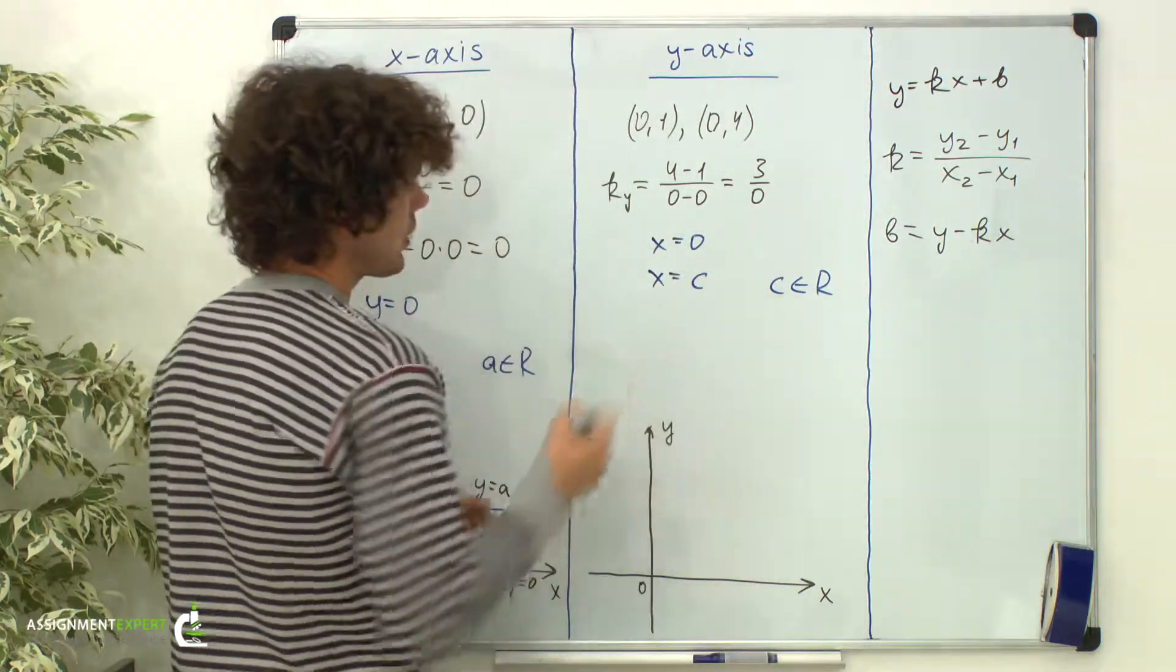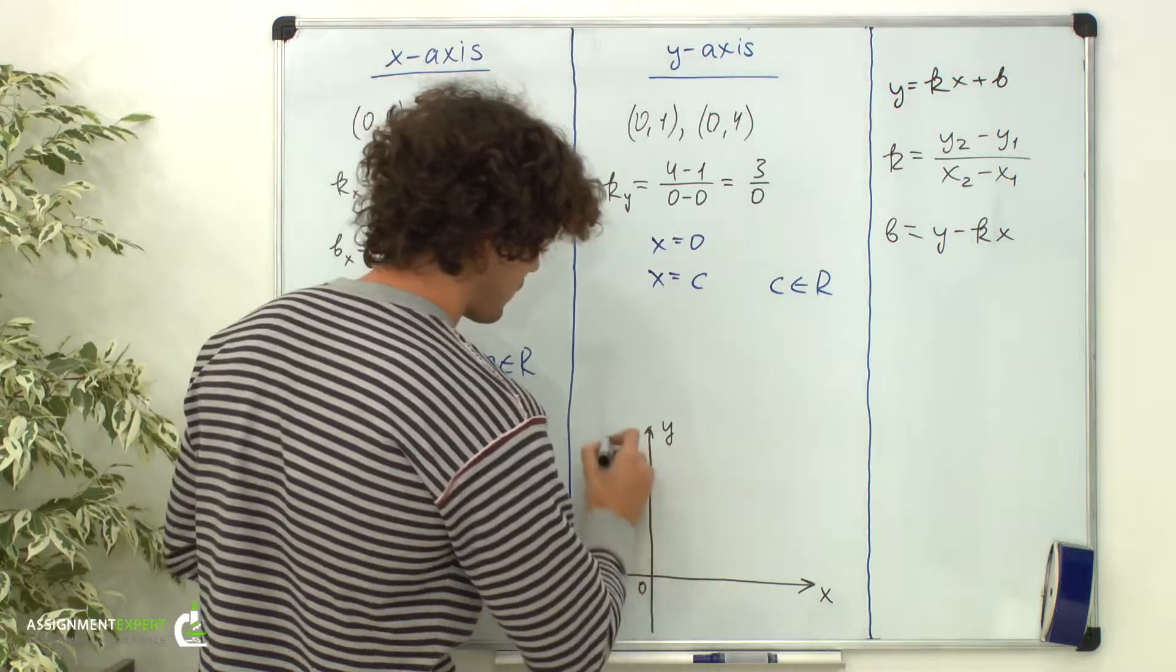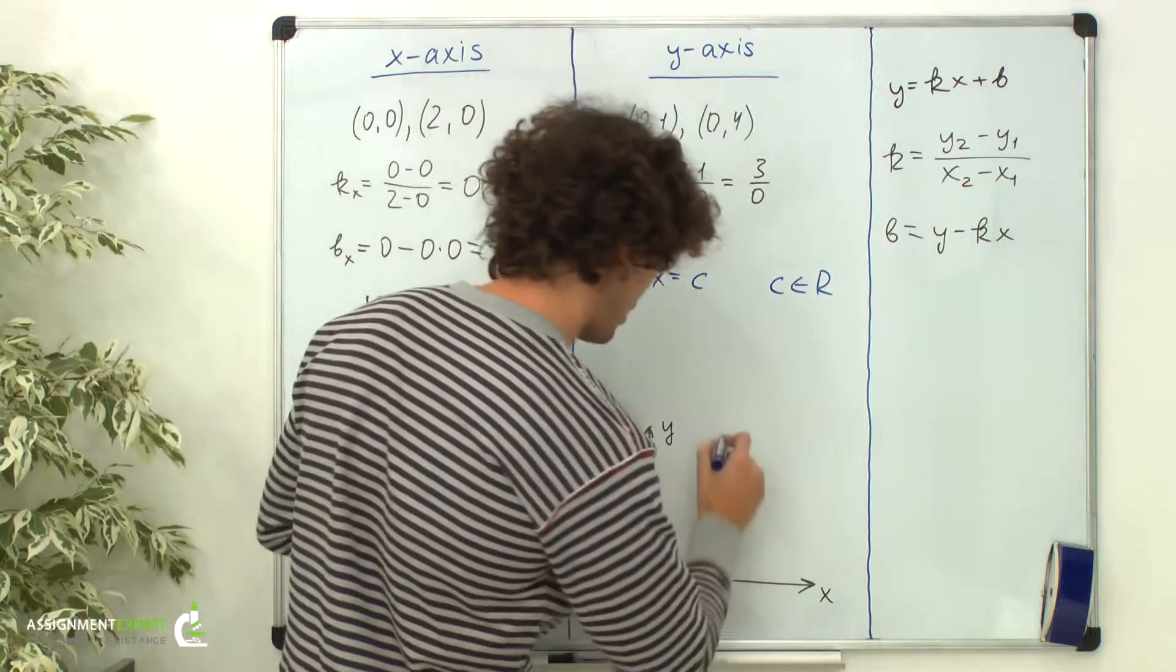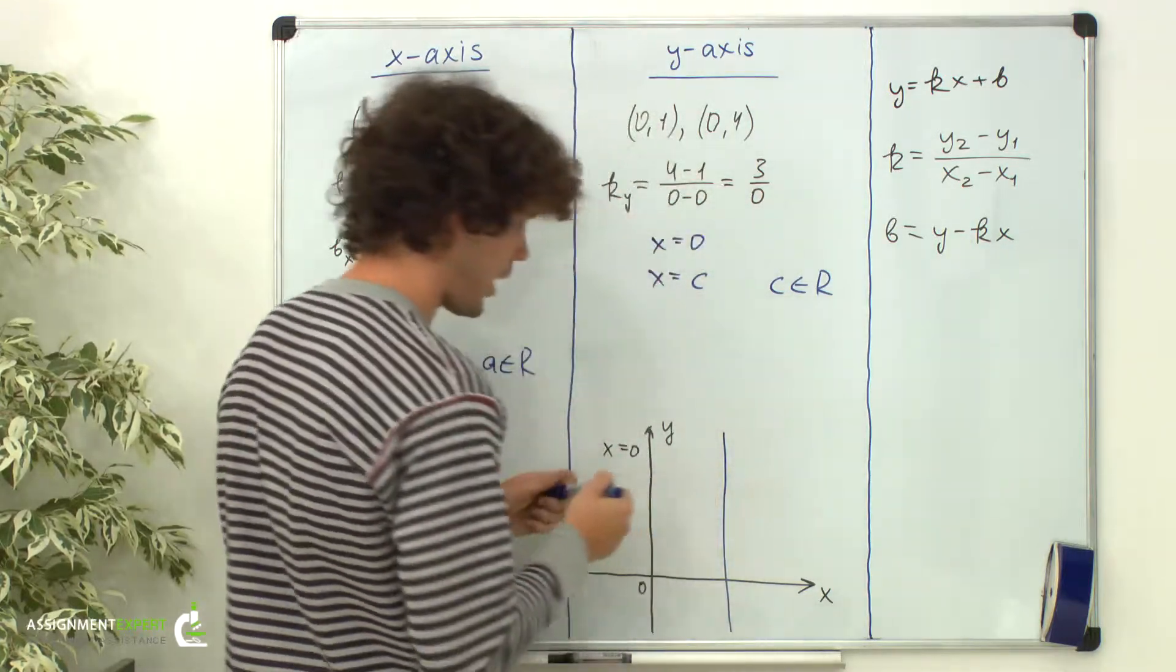On the graph, x equals 0 is a vertical line, and x equals c is another vertical line parallel to the y-axis.